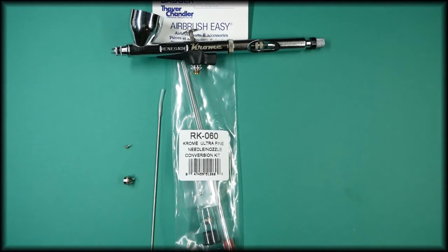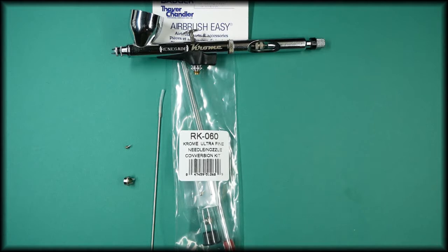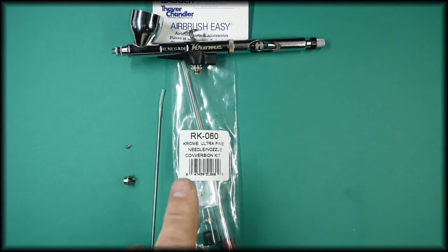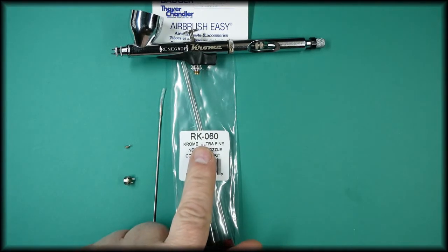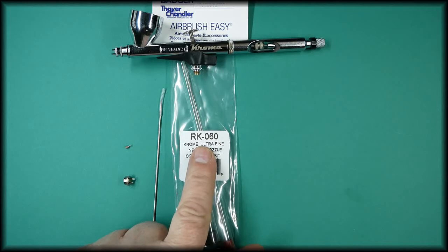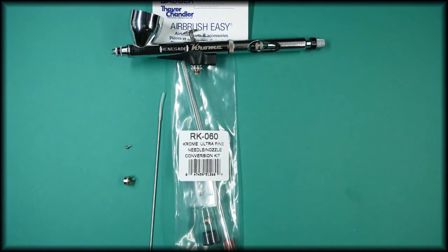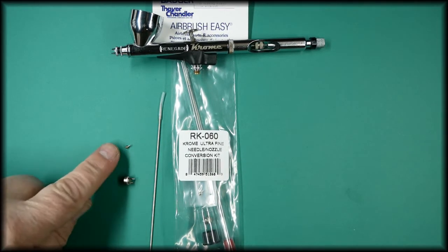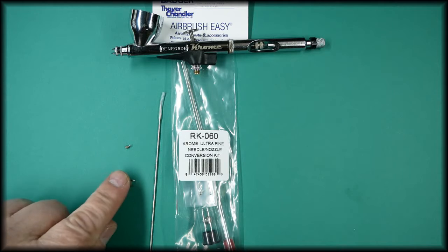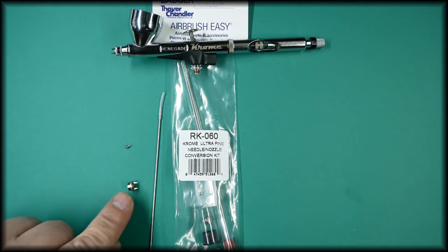In this video we're going to be talking about the Badger Chrome Ultrafine conversion kit. The part number for the kit is RK-060. It is made up of three parts which is the needle, the tip, and the pronged spray regulator.